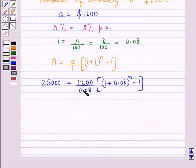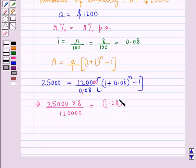Now removing this decimal we have 25,000 into 8 upon 120,000 is equal to 1.08 to the power of N minus 1. Now these three zeroes cancel with these three zeroes.